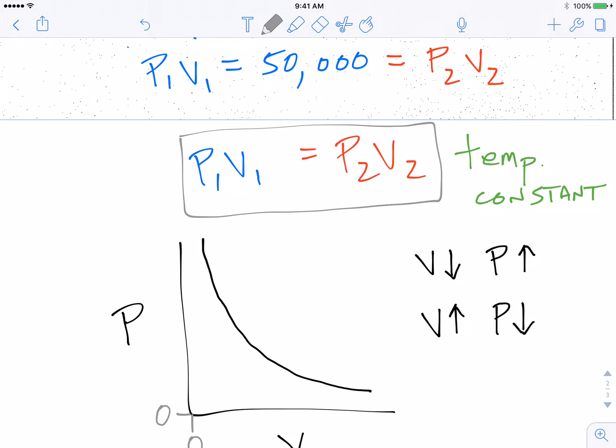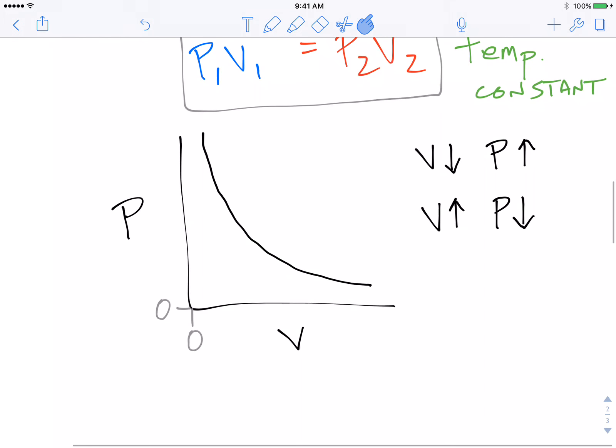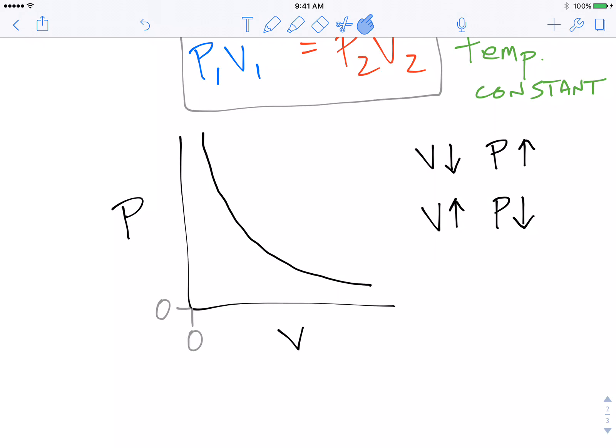We have the idea that the relationship is an indirect relationship, and we also have the idea about what our graph should look like. Hopefully that helps. Thanks for watching.